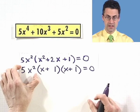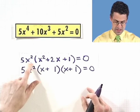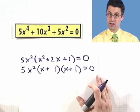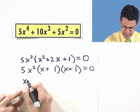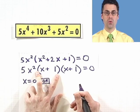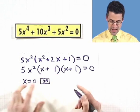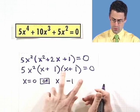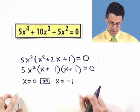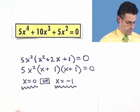So what are my possible solutions? Either this factor equals 0, or this factor equals 0, or this factor equals 0. Either 5x squared equals 0 — dividing both sides by 5, x squared equals 0, which means x equals 0 — or x plus 1 equals 0, giving x equals negative 1, or the other x plus 1 equals 0, which just gives another copy of x equals negative 1. So there are two solutions: x equals 0 and x equals negative 1.